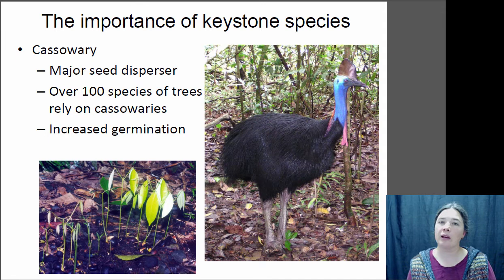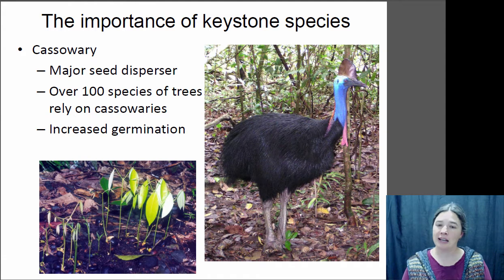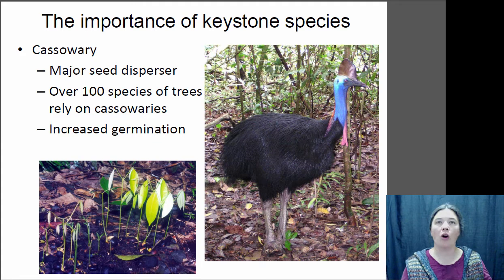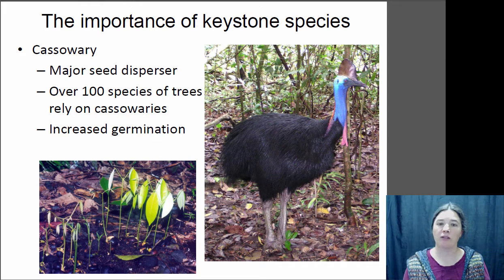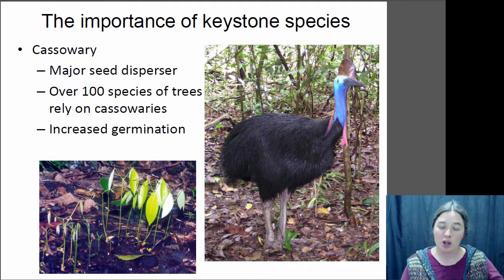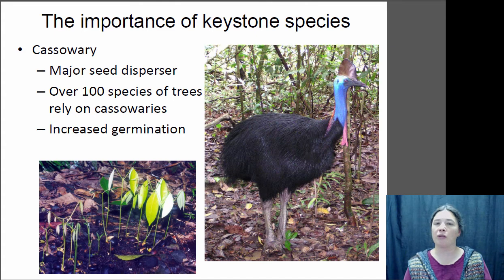Keystone species are really important for the proper functioning of an ecosystem. The cassowary is a keystone species found in Australia. It is threatened by habitat loss and deforestation — it needs large stretches of old-growth rainforest to survive. The cassowary is a really important seed disperser; it eats fruits in the rainforest and the seeds are prepared to sprout as they pass through its gut — seeds actually germinate better after passing through a cassowary. Without the cassowary, these plants would have lower germination rates, so it's really important to the functioning of the whole ecosystem.